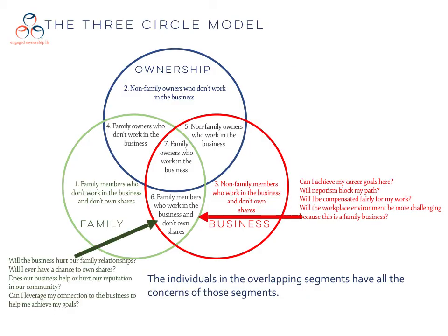Those in number six — family members who work in the business and don't own shares — have concerns about their family relationships, whether they'll have an opportunity someday to own shares, their concerns about their relationship in the community and their reputation, and whether they'll be able to leverage their connection to the business to achieve their own goals, along with career goals and concerns about compensation and workplace environment.